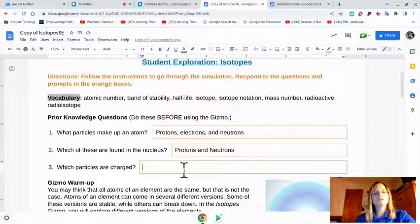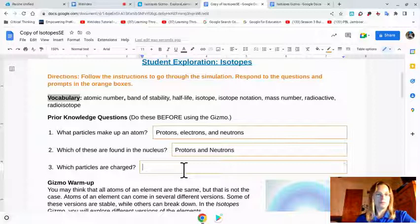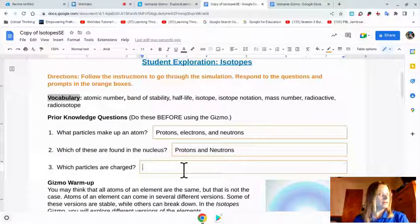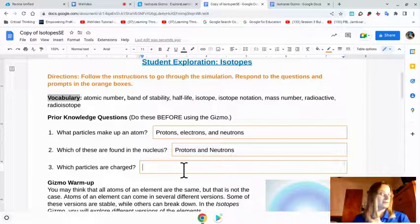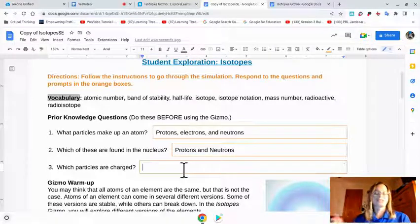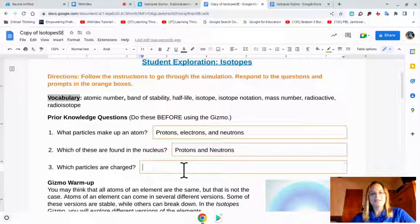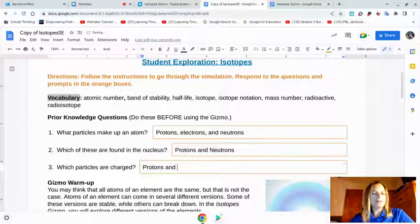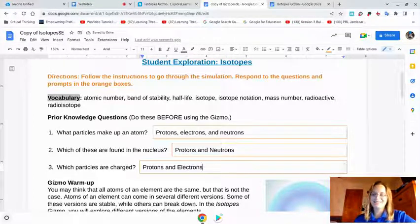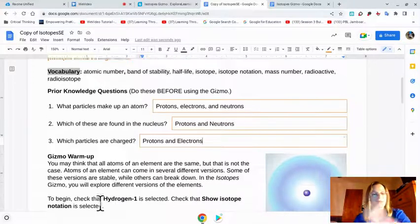And which particles are charged? Think of charge like positive or negative. So you have positive, negative, and neutral. Those are the three particles. Neutral sounds like neutron having no charge, right? So that means the other two are the protons and electrons. You guys were paying attention today, so I know you knew this. So let's move on to the warm-up.